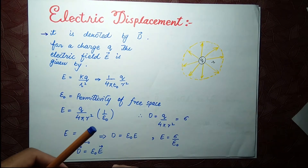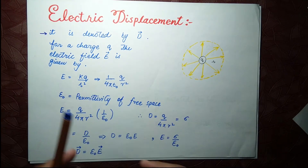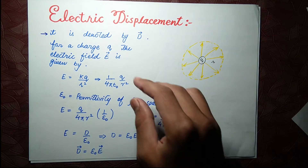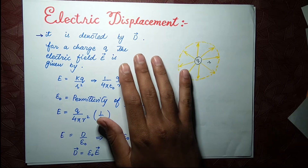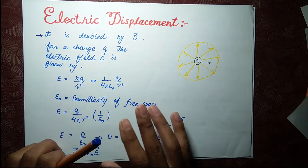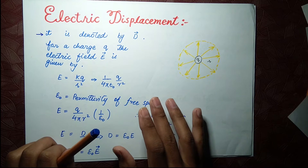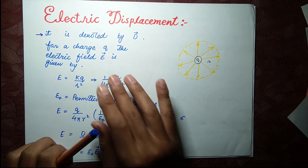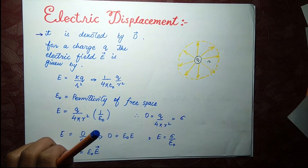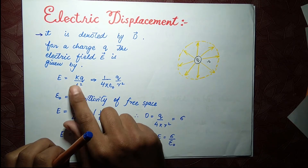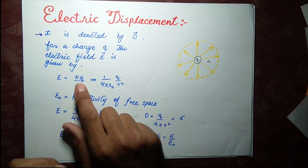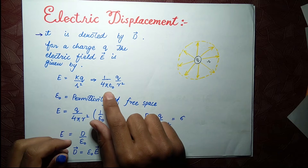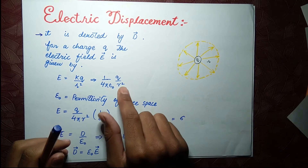The electric displacement vector is a vector quantity and it is denoted by D. For a charge q, the electric field E is given by Coulomb's law: E equals k·q over r², where k is Coulomb's constant, which equals one over four pi epsilon naught, so E equals q over four pi epsilon naught r².